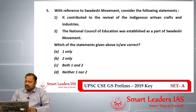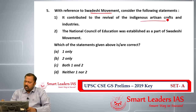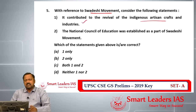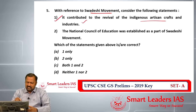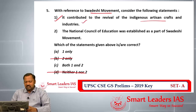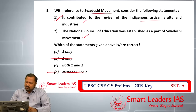Question number five refers to the Swadeshi Movement of 1905. The first statement — that it contributed to the revival of indigenous arts, artisan crafts, and industries — is correct, as it spoke about revival, self-reliance, and Atma Shakti. The second statement — that the National Council of Education was established as part of it — is also correct. Therefore, the answer for question number five is C.